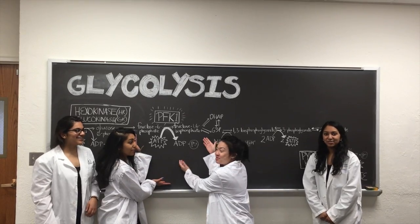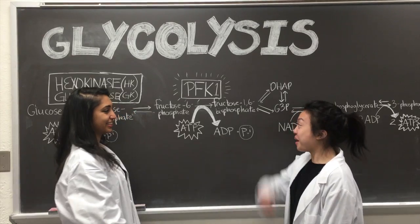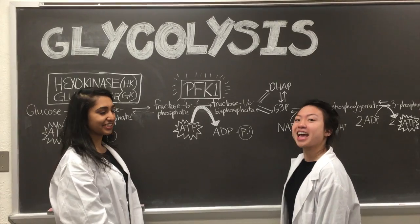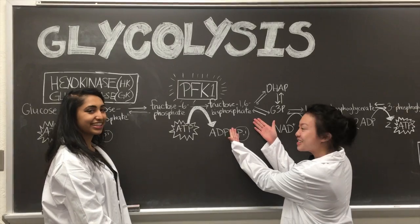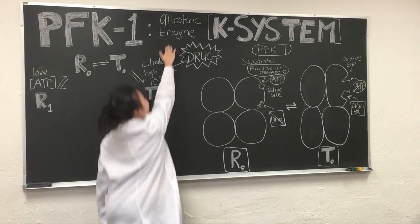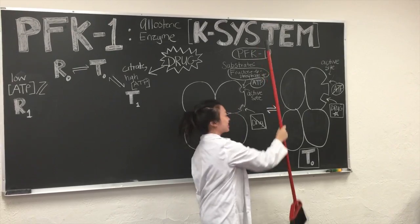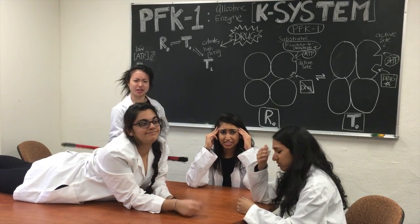PFK, let's make an inhibitor to stop you. Investing some ATP, PFK commits. F6P turns into F16BP. You're an allosterically regulated enzyme. NK system applies to you. Somehow I'll make an inhibitor to stop you.